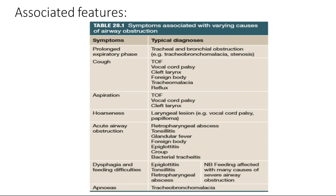Symptoms of varying causes of airway obstruction: prolonged expiratory phase is seen in tracheal and bronchial obstruction such as tracheobronchomalacia and stenosis. Cough is mostly due to vocal cord palsy, cleft larynx, tracheoesophageal fistula, foreign body, tracheomalacia, and reflux. Aspiration occurs mostly because of absence of closure of the laryngeal inlet — due to vocal cord palsy or tracheoesophageal fistula. Cleft larynx is a small longitudinal opening between the trachea and the esophagus through which aspiration can occur.